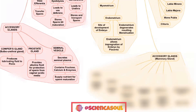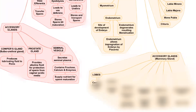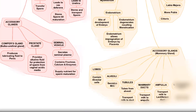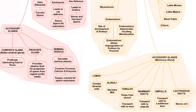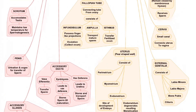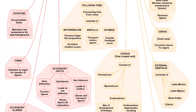Next part is the accessory gland, which is the mammary gland. Parts of the mammary gland are: lobes, alveoli, tubules, mammary ducts, ampulla, and lactiferous ducts. Lobes contain alveolar cells. Alveoli secrete milk. Tubules are tubes from the alveoli that transport milk to the duct. Mammary ducts transport milk to the ampulla. The ampulla transports milk to the lactiferous duct, and the lactiferous duct stores milk.